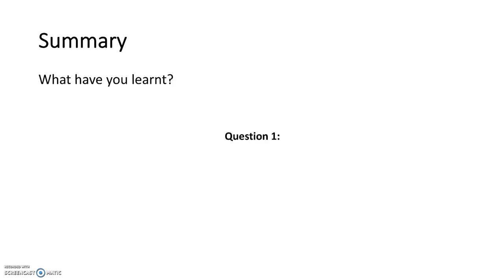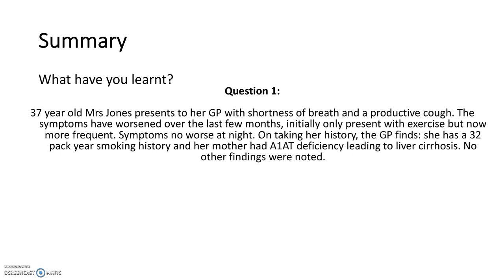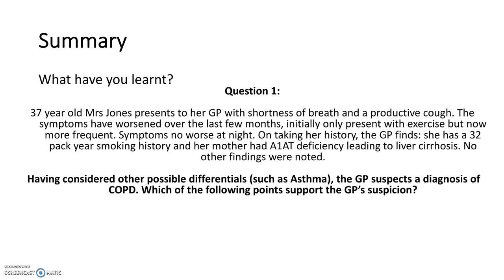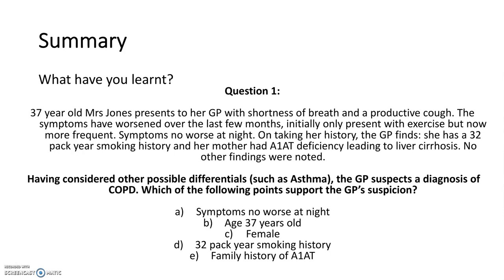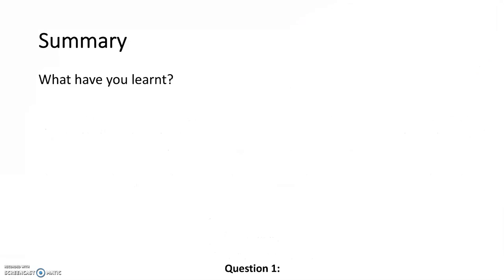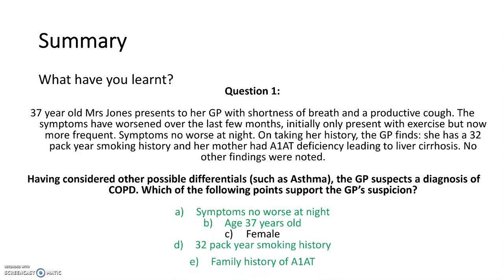To summarise, here is a short case. A 37-year-old Mrs Jones presents to her GP with shortness of breath and a productive cough. Symptoms have worsened over the last few months, initially on exertion but now more frequent and at rest. Symptoms are no worse at night. She has a 32 pack-year smoking history and a family history of alpha-1 antitrypsin deficiency. The GP suspects COPD. Which points support COPD over asthma? The correct answers are A, B, D, and E — symptoms no worse at night, her age of 37, her 32 pack-year smoking history, and her family history of alpha-1 antitrypsin deficiency.